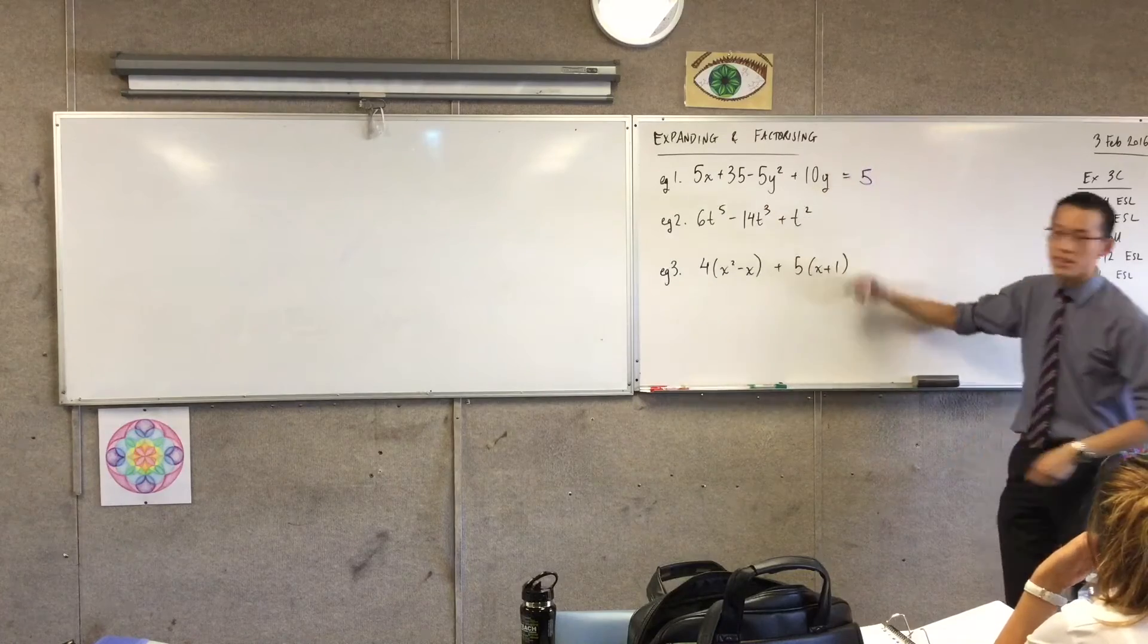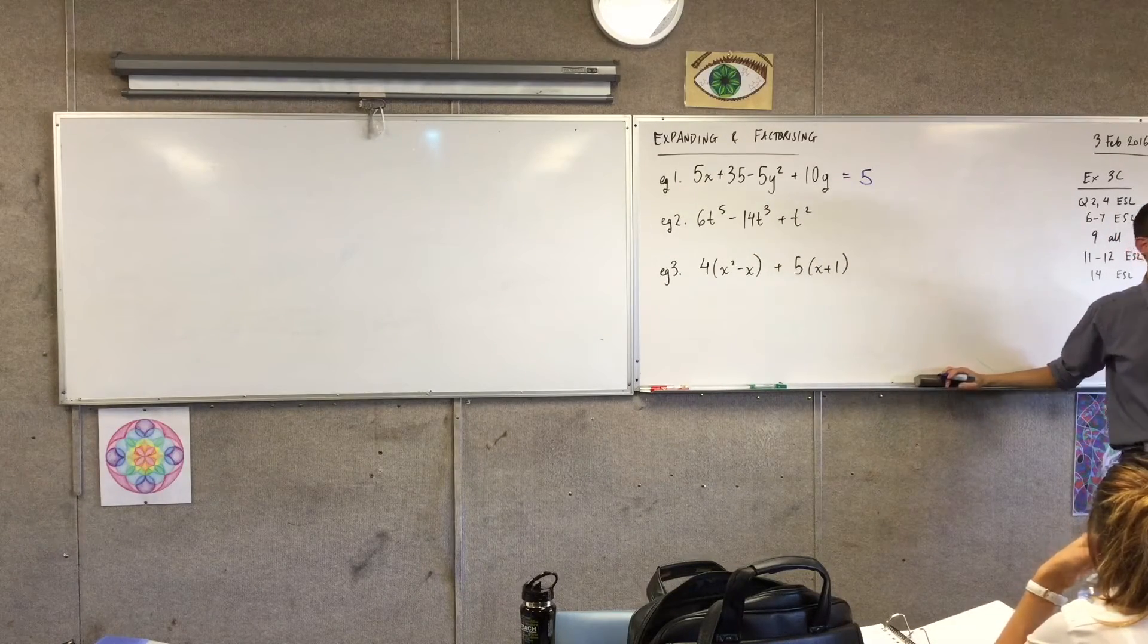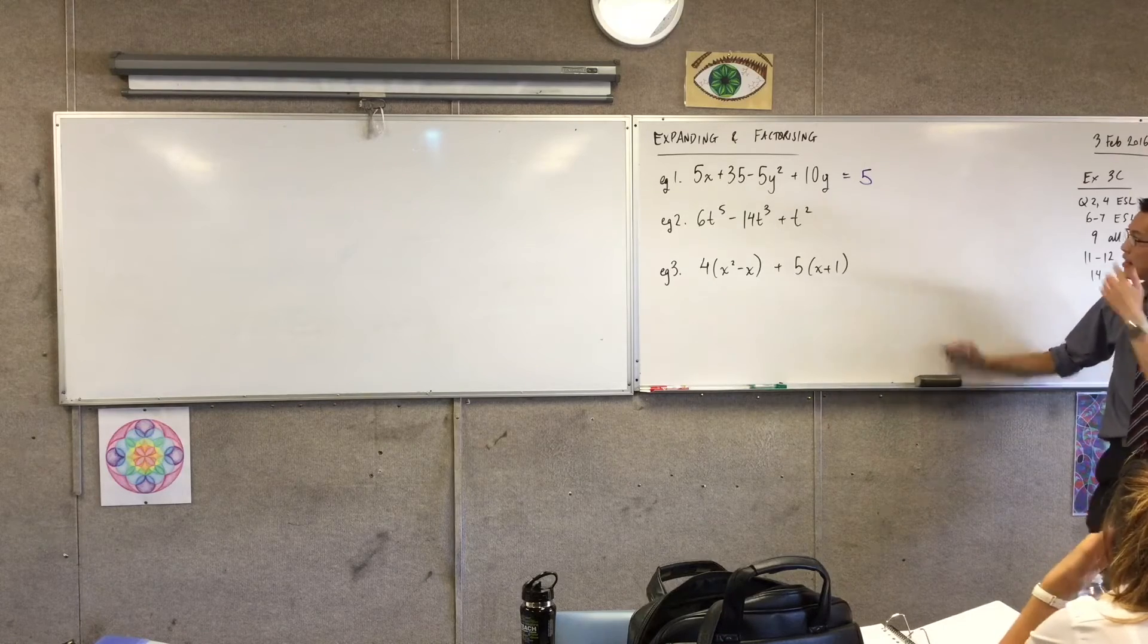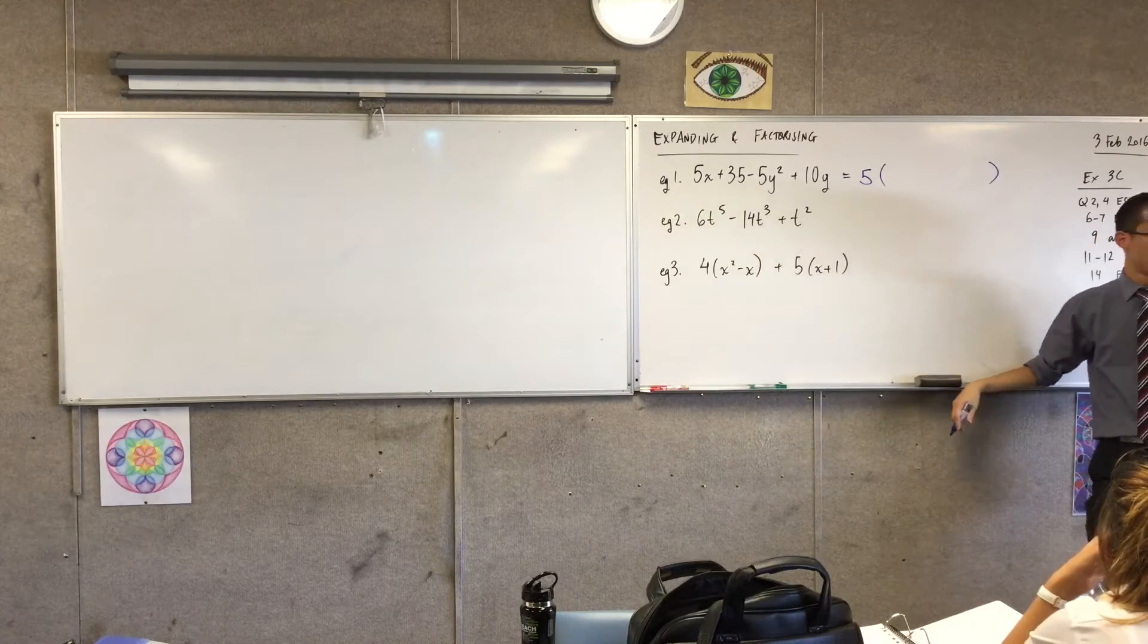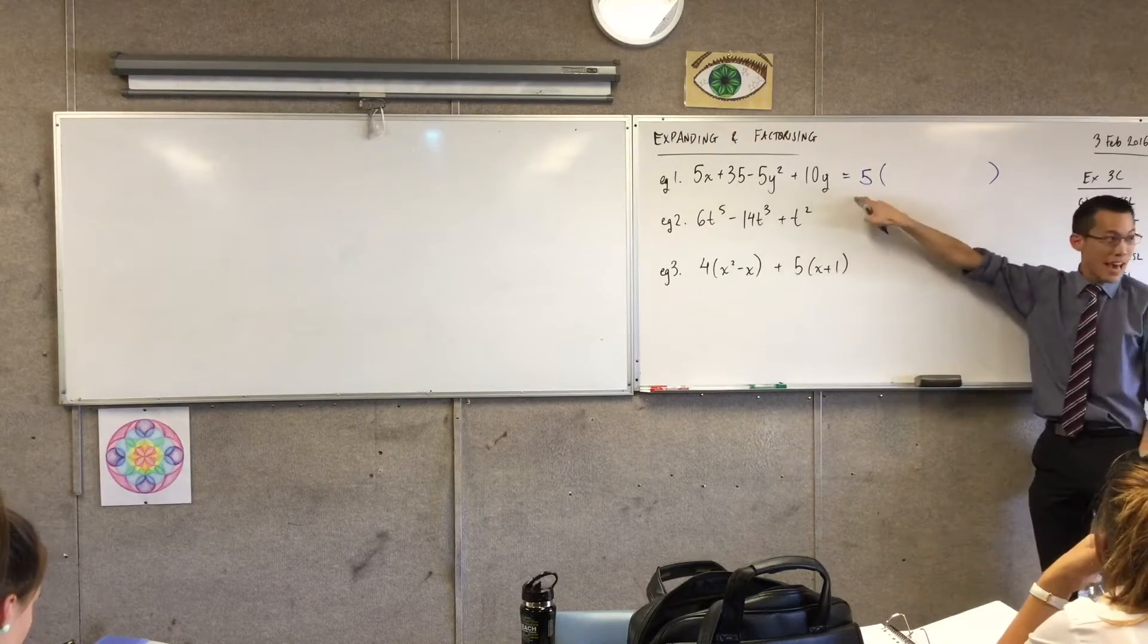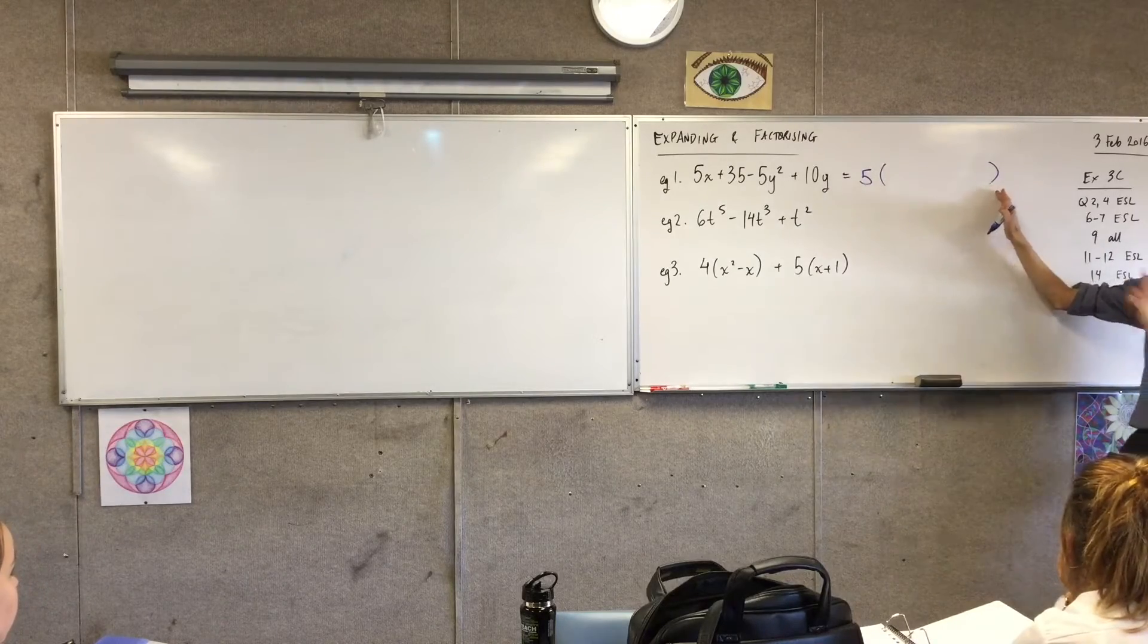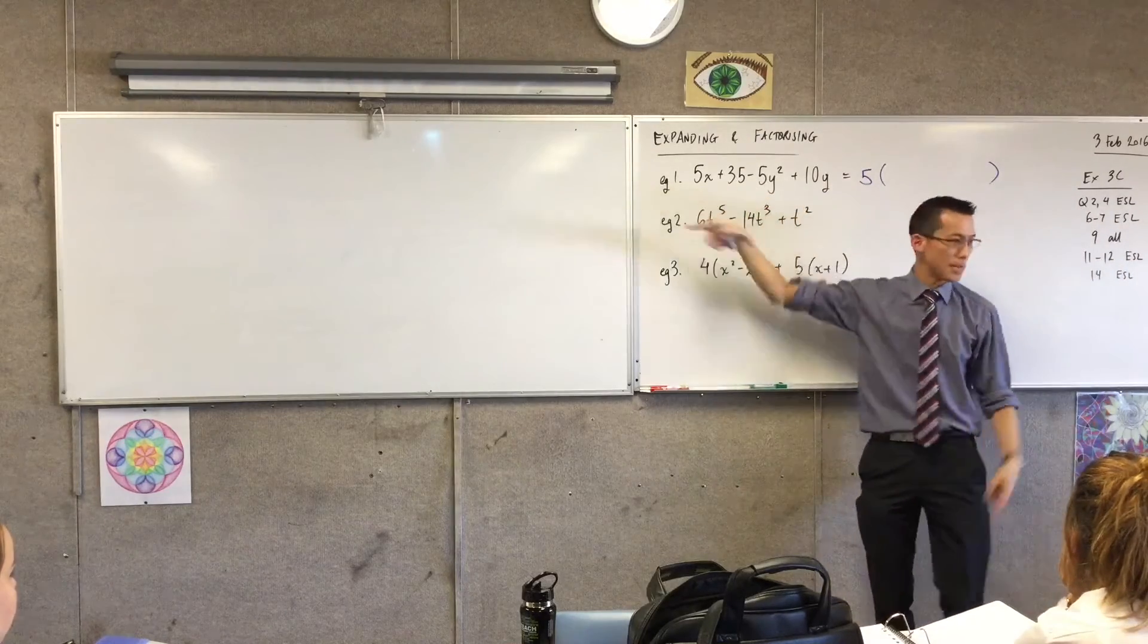Every single one has a 5 in common. I don't need to write those 5s so many times. I just need to write it once. And then, if I put brackets in place, this is the pinnacle of mathematical laziness. Just say, do that, do everything in there. Don't bother writing it many times. So we're going to factor out 5 from each of the terms. You don't need to say it so many times.